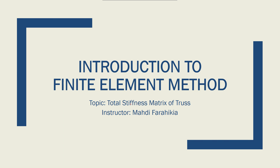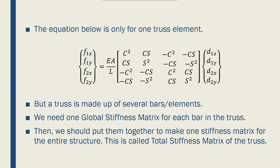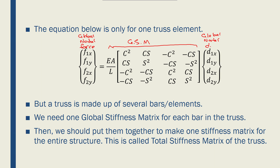Let's move on to finding the total stiffness matrix for the entire truss structure, and we'll do that with an example. So far we have learned that the equation for a global stiffness matrix of a truss element is the global stiffness matrix of a single truss element, relating global nodal forces and global nodal displacements. But a truss has more than one element — it has several bars, so we need to find a global stiffness matrix for every single element and then merge them into a big total stiffness matrix for the entire structure. That's what we'll cover through an example in this lecture.